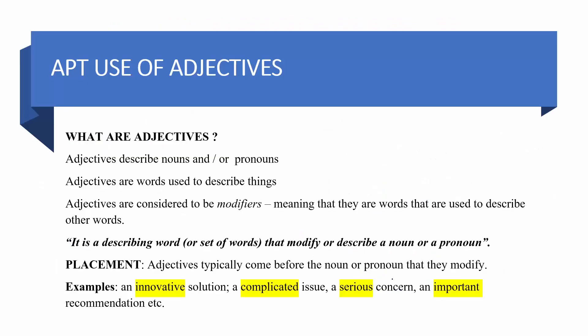Let's understand this with examples. Adjectives are our describing words — they describe nouns and pronouns. Nouns are names of people, places, animals or things, and pronouns are used in place of nouns. So, both sets of words are described by adjectives.